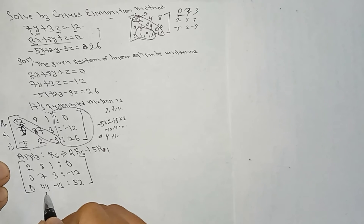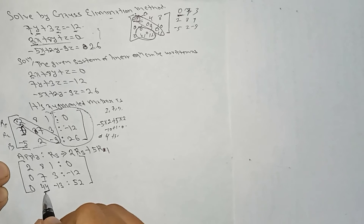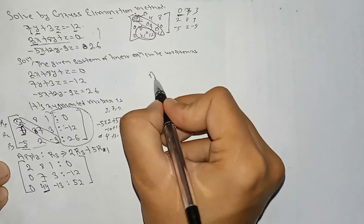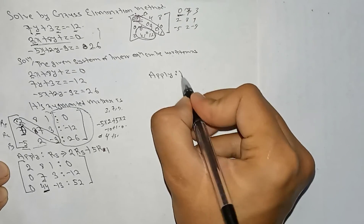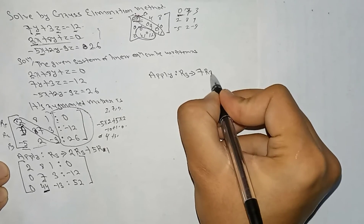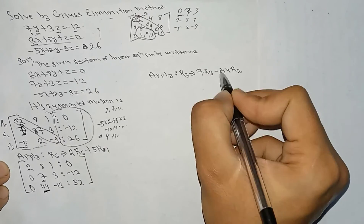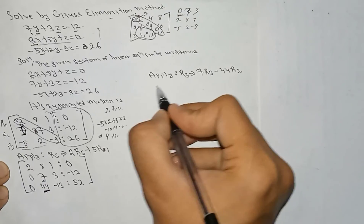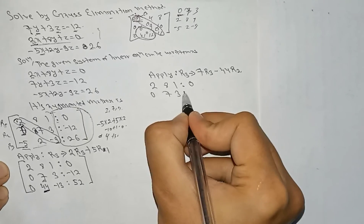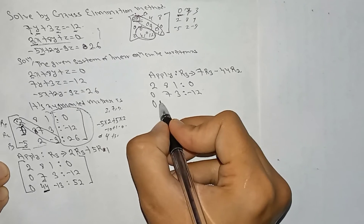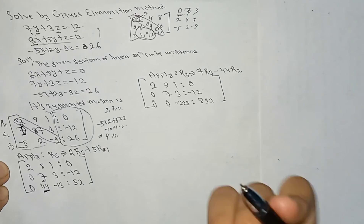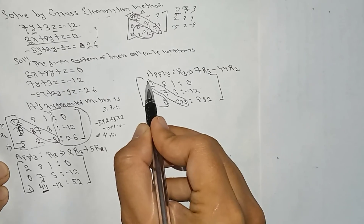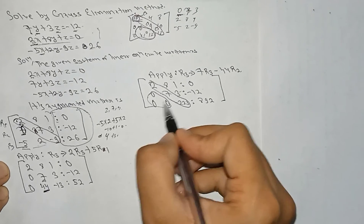But this is not yet upper triangular because we have the value 44. So we have to make this also 0 with the help of row 2. Apply: 7R3 minus 44R2. Row 1 and row 2 remain as they are: 2, 8, 1, 0 and 0, 7, 3, minus 12. Row 3 becomes: 0, 0, minus 223, and 892. Now we have the upper triangular matrix form.